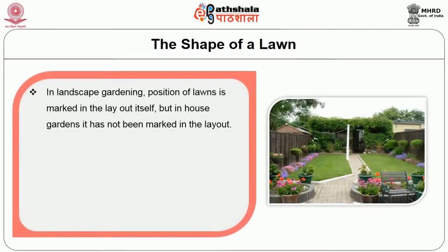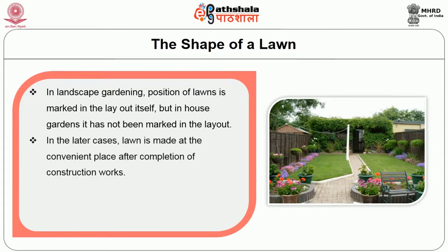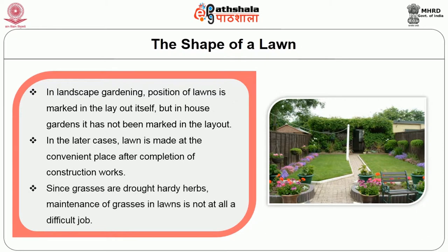In landscape gardening, position of lawn is marked in the layout itself, but in house garden it has not been marked in the layout. In the latter cases, lawn is made at the convenient places after completion of construction works. Since grasses are tough hardy herbs, maintenance of grasses in lawn is not at all a difficult job.